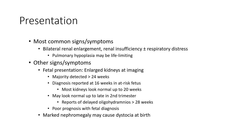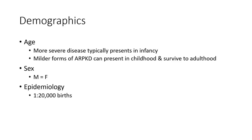Kidneys may look normal up to late second trimester. There are reports of delayed oligohydramnios beyond 20 weeks. Renal diagnosis may cause macrosomia and birth difficulties. More severe disease types present in infancy; milder forms of autosomal recessive polycystic kidney disease can present in childhood and survive to adulthood. Equal incidence between male and female. Epidemiology: 1 in 20,000 births.